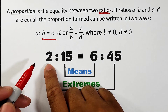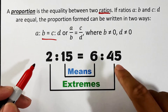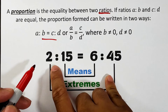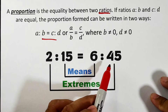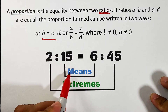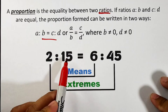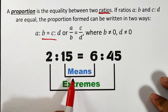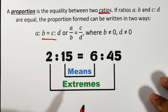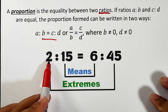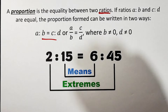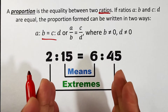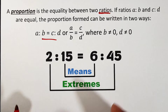Here is an example: this proportion is read as 2 is to 15 is equal to 6 is to 45. The numbers 15 and 6 are called the means of the proportion, while 2 and 45 are the extremes. The means are the inner numbers and the extremes are the outer numbers of the proportion.